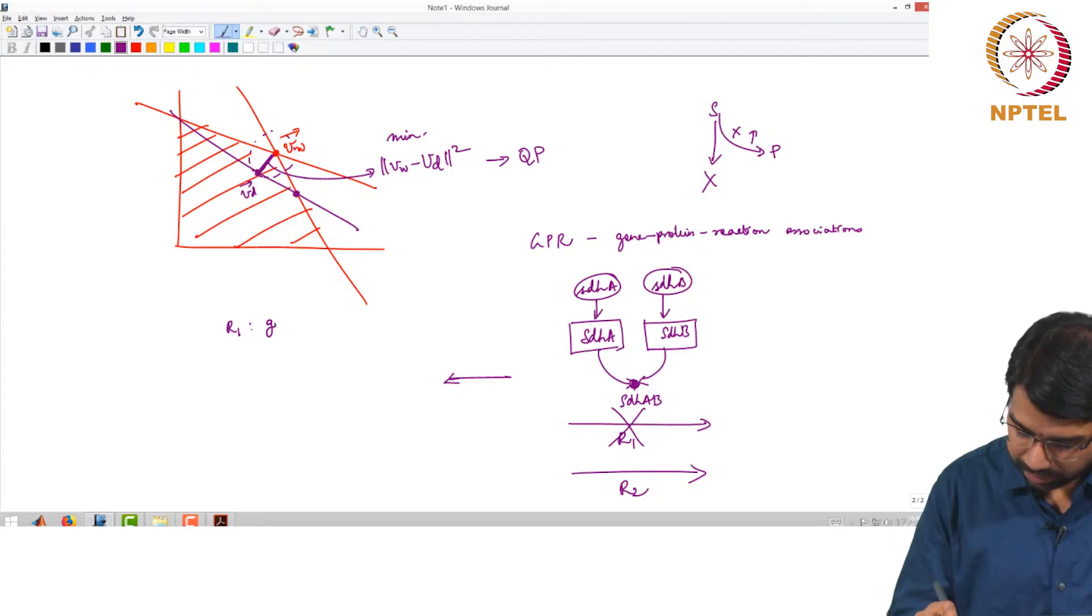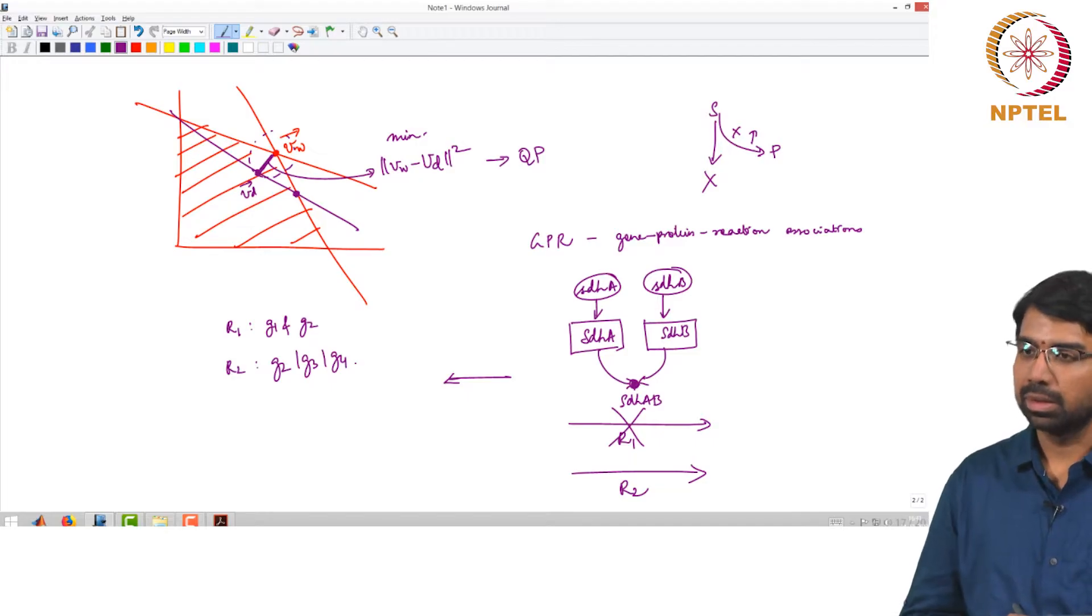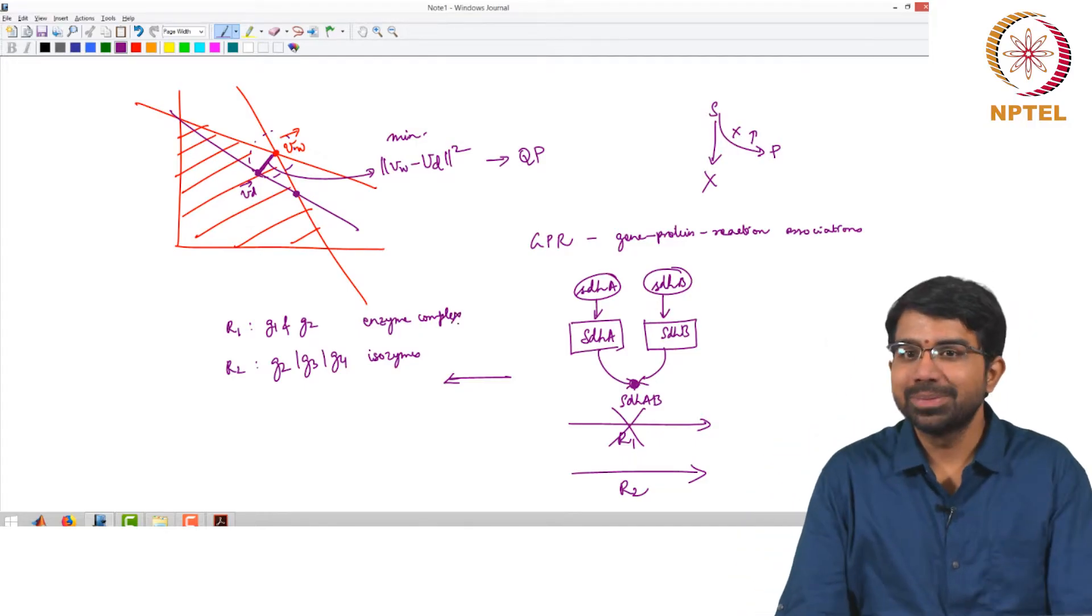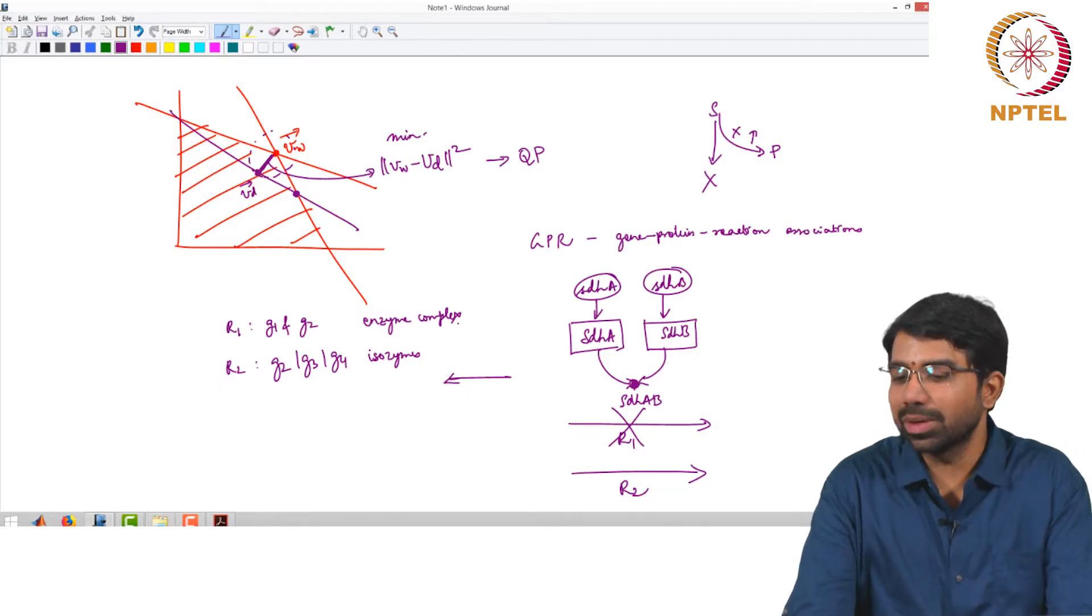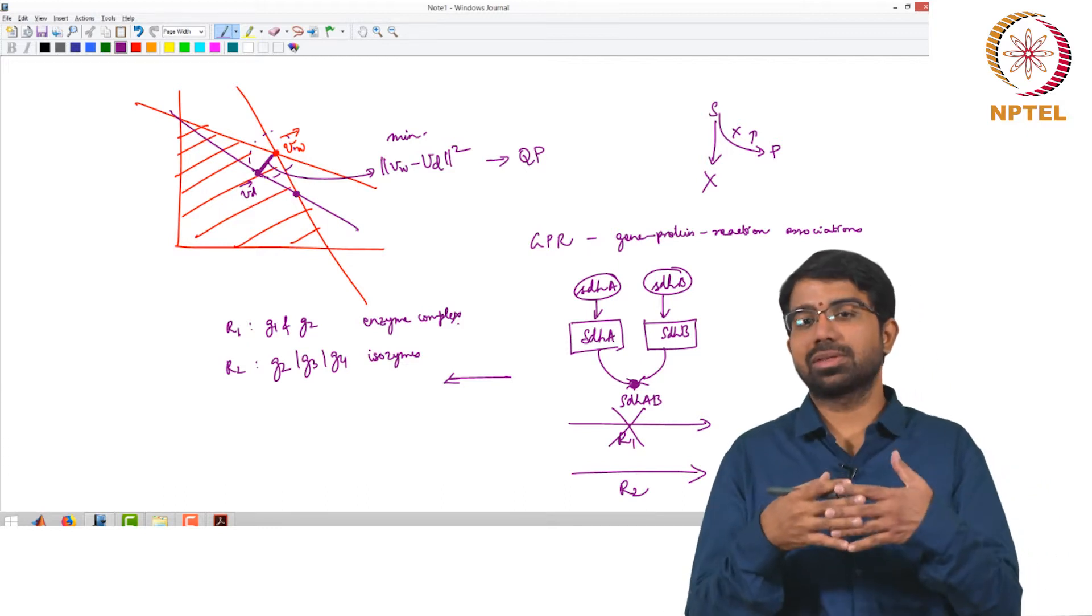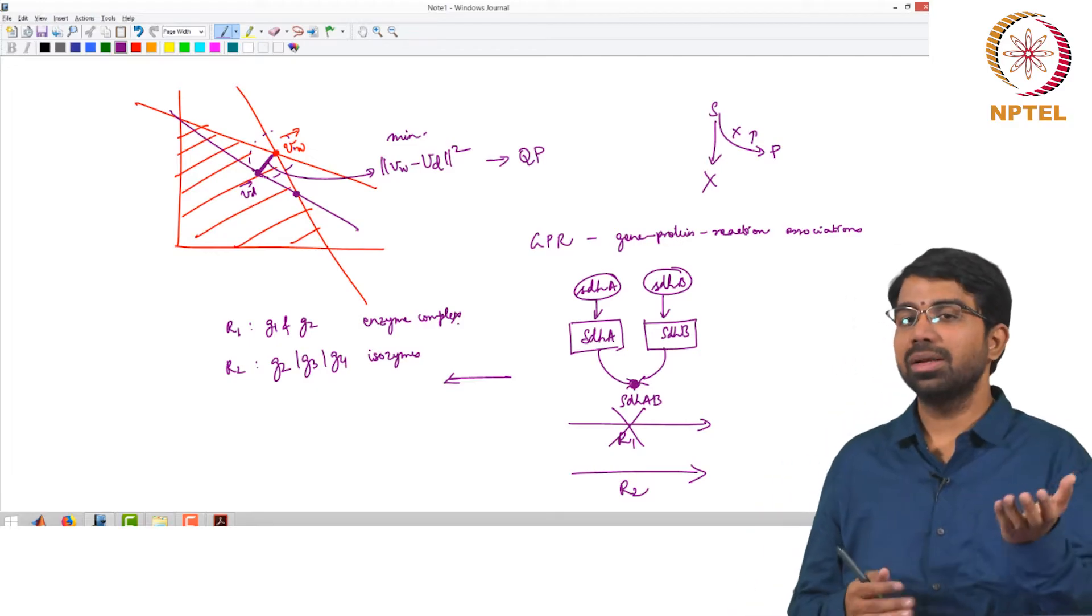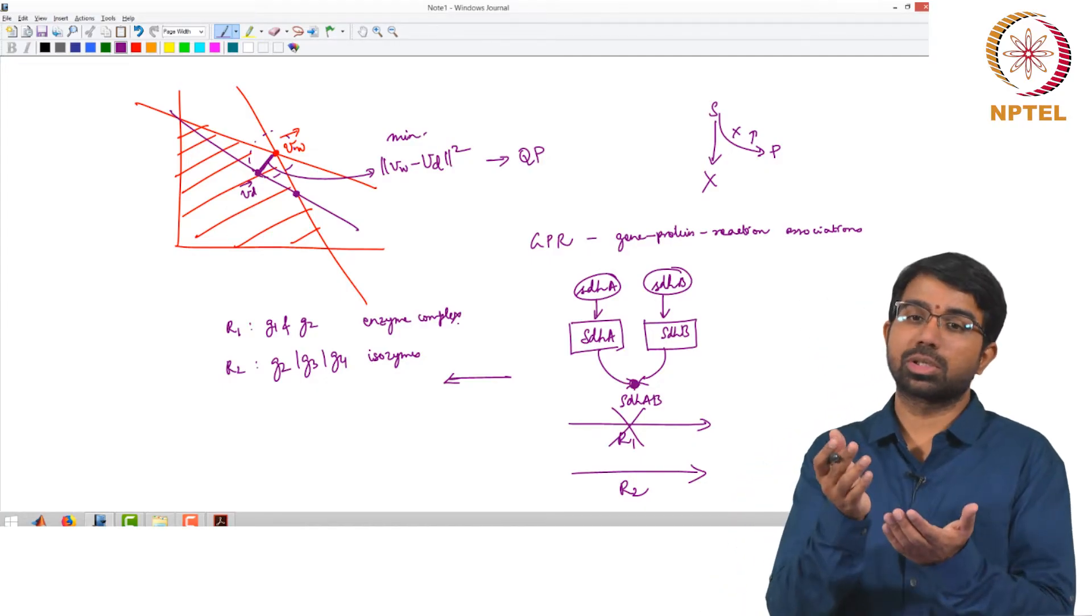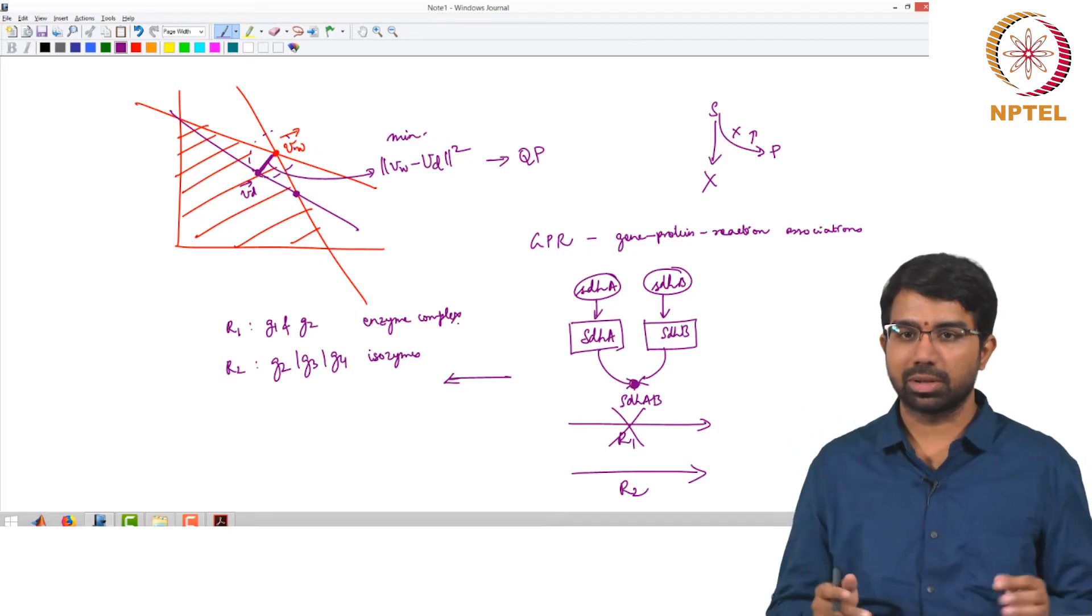You can say R1 is G1 and G2, or R2 is G2 or G3. These are like isozymes and this is like an enzyme complex. Isozymes are enzymes that are equivalent - they may be able to substitute for one another but they may be different. They may not be perfectly equal. Isozyme 1 might do the reaction very well. Isozyme 2 might be able to do the reaction to 80% of that capability. It might end up that the organism grows slower when you delete isozyme 1, but when you delete isozyme 2, there is no effect on the organism.